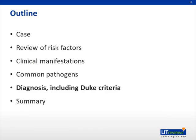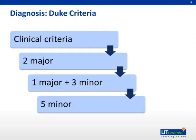Diagnosis, including Duke's criteria. There are several sets of diagnostic criteria, but you should be familiar with Duke's criteria. Diagnosis is made when a patient meets two major criteria, or one major and three minor criteria, or five minor criteria.